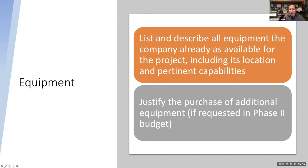Equipment is a very simple document that lists and describes all the equipment the company already has available for the project. This is important because typically equipment is not permitted to be purchased in phase one. Equipment is defined as any single item valued at over $5,000 with a life of a year or more. So a laptop is not equipment, but an autoclave is equipment — you would not be able to purchase that kind of equipment in a phase one. You just list out what your lab already has. Sometimes all we put here is 'there's no special equipment required to complete the work outlined.'